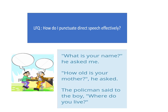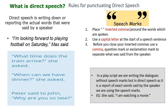Here you can find the dialogues: What is your name? How old is your mother? The policeman said to the boy. Here you can find the speech marks in inverted commas. Direct speech is writing down or reporting the actual words that were said by the speaker. The dialogues are the actual words said by the speaker. Rule one: place inverted commas around the words which are spoken.